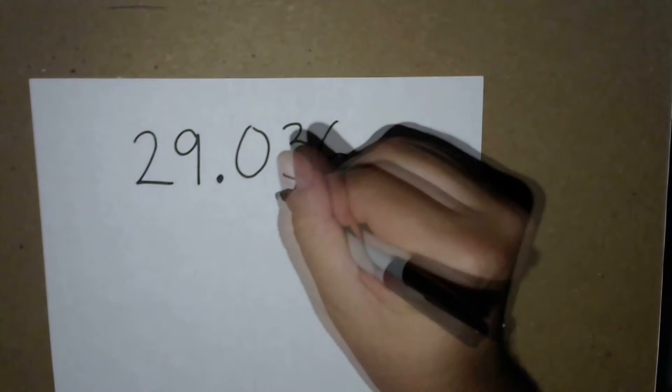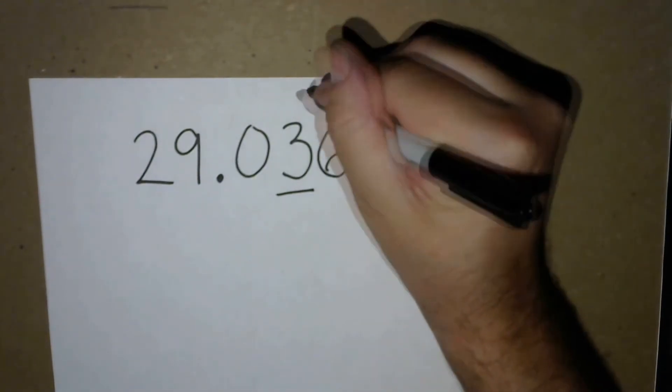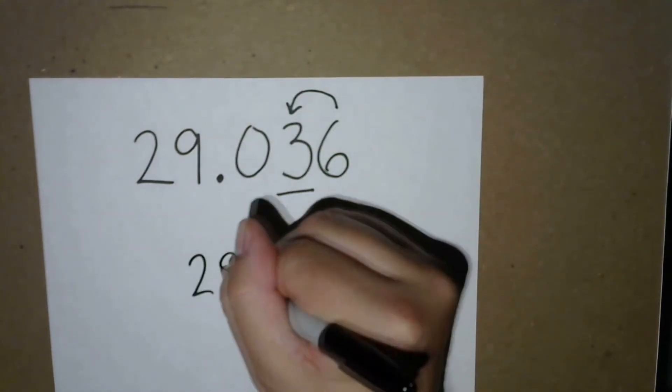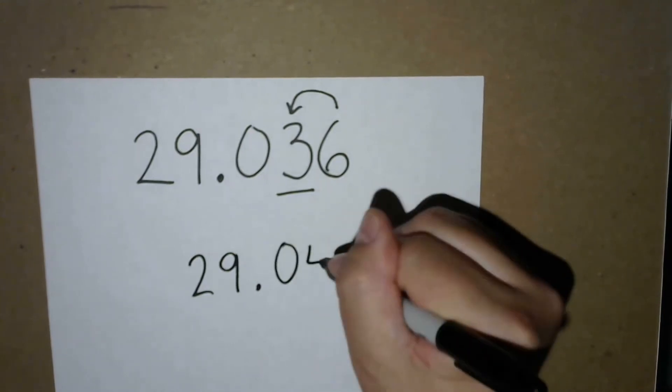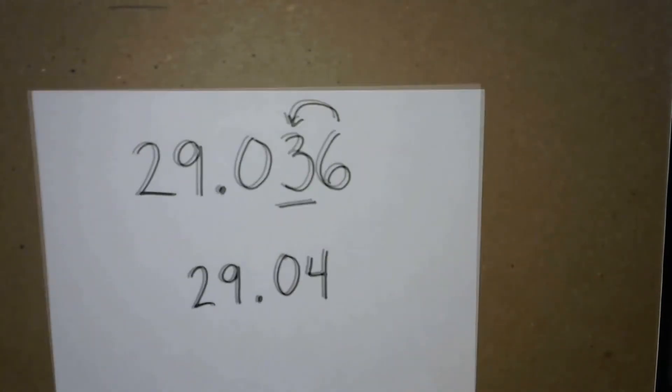Round up when the number's five or more. You gotta round up. Tell your brother five or more, he's got to round up. Tell your sister five or more, she's got to round up. What's the score? Five or more, gonna round up.